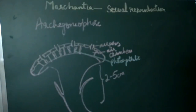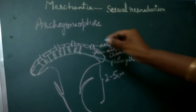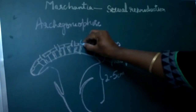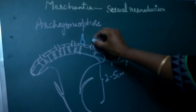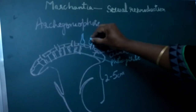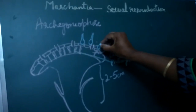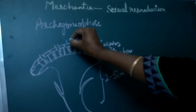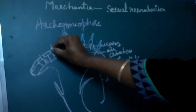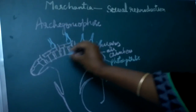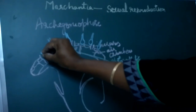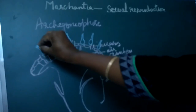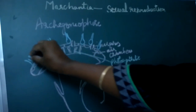The archegonia develop on the dorsal surface of the thallus, on the lobes of the peltate disc. Around 12 to 14 archegonia develop on the dorsal surface of the thallus, and they are arranged in an acropetal manner — that is, the larger archegonia towards the center and the developing or younger archegonia towards the periphery of the lobes.